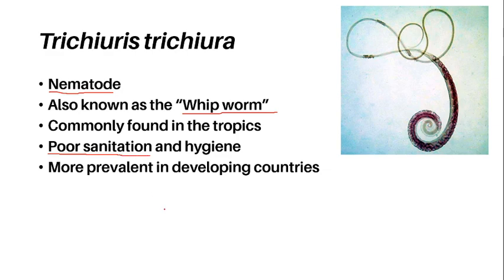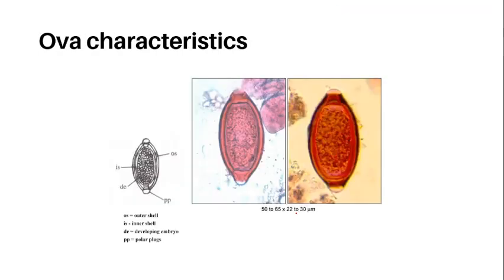One can get infected with Triturus after an individual ingests an embryonated egg, which matures in the soil. The appearance of the ova of this parasite is very distinct. Its ova is thick-shelled, consisting of an outer and an inner shell, a developing embryo, and a pair of polar plugs at each end. These are passed in stool onto the soil, where it continues to develop before it becomes infective.